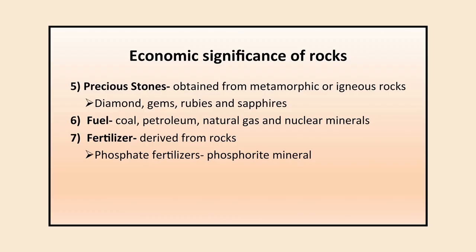Another economic significance is precious stones — various precious stones such as diamonds, gems, rubies, and sapphires are derived from metamorphic and igneous rocks. The sixth significance is fuel — various fuels such as coal, petroleum, and natural gas are derived from rocks, and nuclear minerals are also used for generating electricity. Fertilizers are also derived from rocks — phosphate fertilizers are derived from phosphorite minerals and are widely used in growing food.